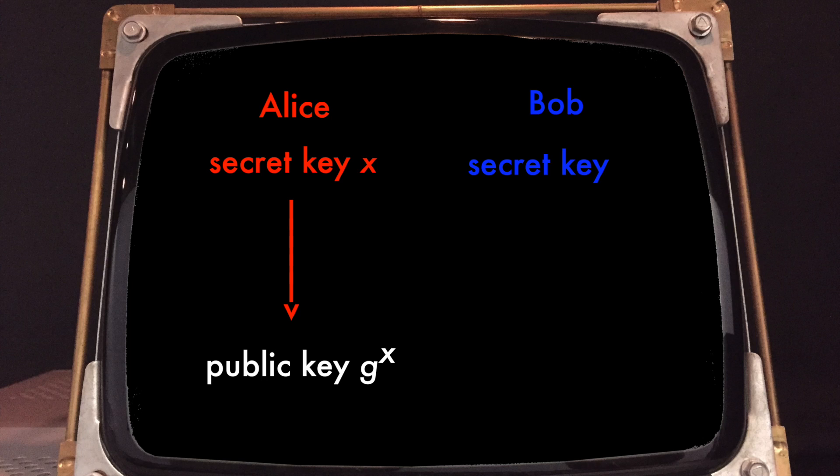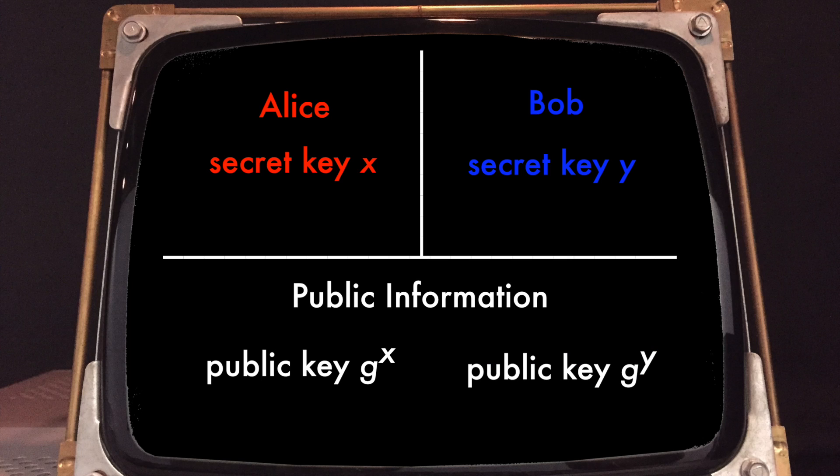Bob has a secret, which is a number Y, and he has a public key, which is G to the power Y, which he publishes. So Alice knows G to the power Y, which is the public key of Bob. She can take this G to the power Y and raise it to her secret key, which is a value X. You obtain G to the power Y raised to the power X, which is equal to G to the power X multiplied by Y. Crucially, only Alice can do this computation because only Alice knows the value of X.